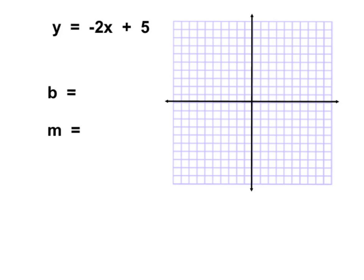Let's take a look at another example. In this case, our equation is y equals negative 2x plus 5. Our y-intercept point is 5 and our slope is negative 2. If our slope is a whole number and we'd like to think about it as a fraction in terms of rise over run, we can always put that whole number over 1.